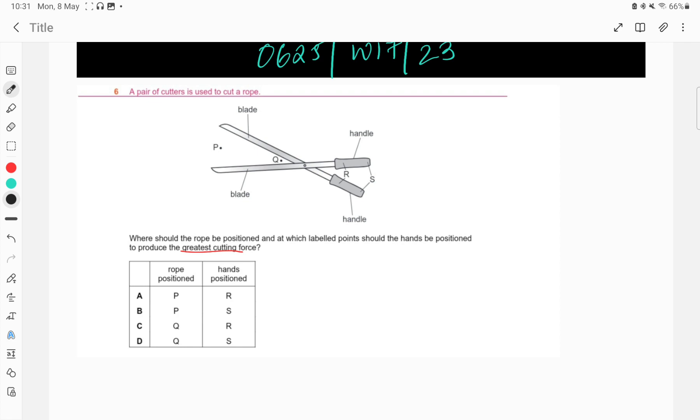Reading out the question for you all, a pair of cutters is used to cut the rope. You can see the cutter. On the handle, you will exert some force F, which will produce some moment. And the same moment will be produced at the blades. The condition is, you need to make sure that the cutting force is maximum at the blades. So, how will you go ahead?